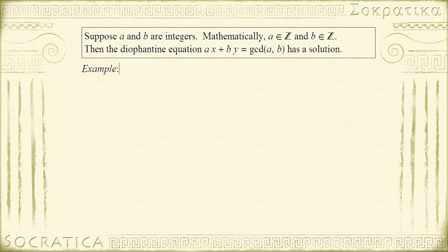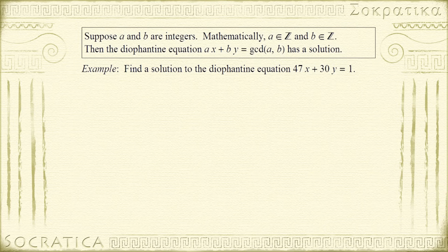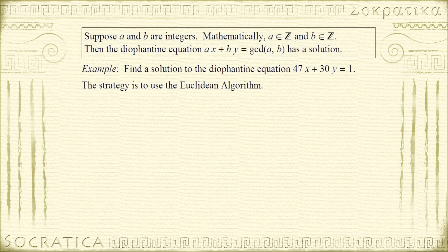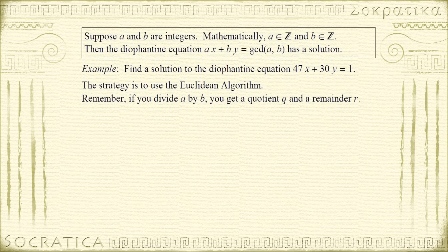For example, we're going to find a solution to the Diophantine equation 47x + 30y = 1. Since 47 and 30 are relatively prime, their greatest common divisor is 1, so according to our statement this should have a solution. The strategy is to use the Euclidean algorithm. In terms of notation, if you divide an integer a by an integer b, you get a quotient q and a remainder r, expressed as a = bq + r. We'll use this notation because it's more compact than traditional long division notation.